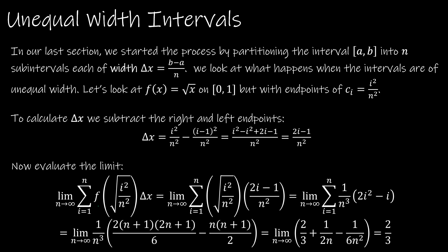So in our last video, we were looking at partitioning the interval into n equal subintervals. So each subinterval had the same width, delta x, which was b minus a over n. But what if we had intervals that were not the same width?